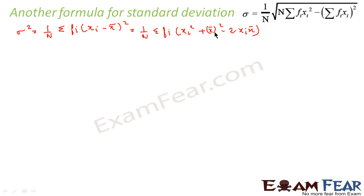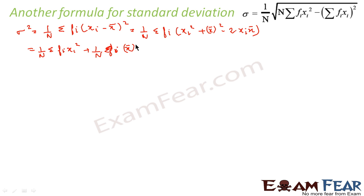The same expansion gives us: 1 by n summation fi·xi squared, plus 1 by n summation fi into mean squared, minus 1 by n into summation fi into 2 into xi into mean.